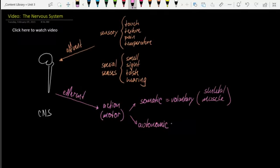The autonomic would be involuntary. We don't have to think about it. It just happens. Examples are smooth muscle and cardiac muscle.